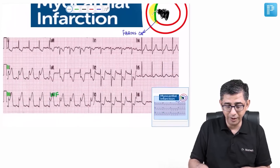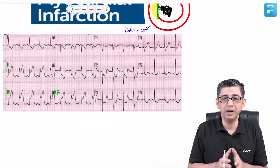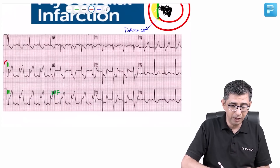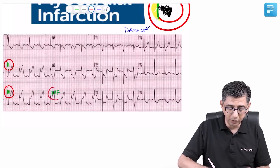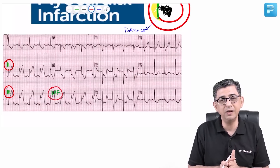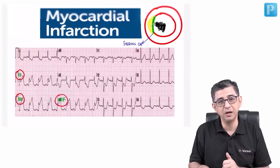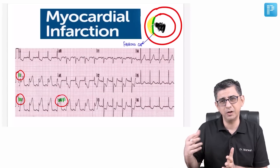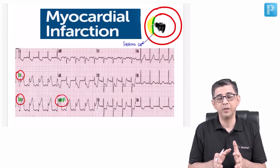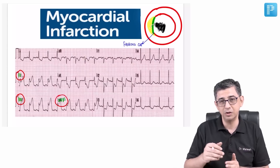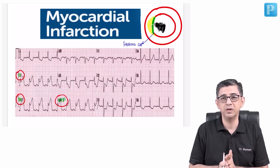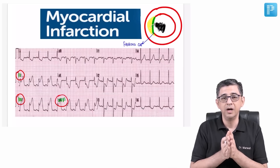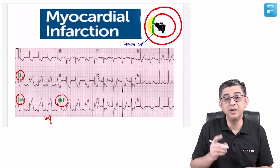Now let's focus on the ECG. In exams, they typically show ST elevation in leads II, III, and AVF. When a question begins with chest pain, you immediately think of myocardial infarction. You should calculate the heart rate — strategies for that will come subsequently. Since this is a rapid revision on infarct localization, the key point is: whenever the inferior surface of the heart is involved, look at leads II, III, and AVF.